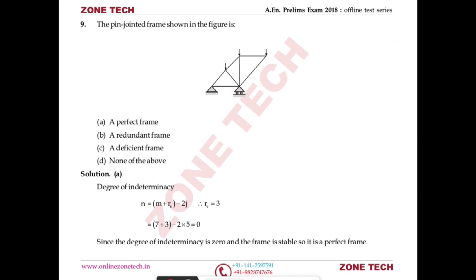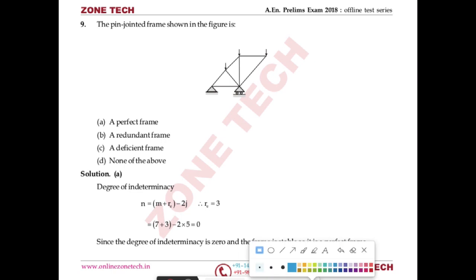Question number nine: classify the pin jointed frame shown in the figure. Options are: A) perfect frame, B) redundant frame, C) deficient frame, D) none of the above. A perfect frame has static indeterminacy zero; redundant means indeterminate; deficient means unstable. We check by finding the degree of indeterminacy = number of unknowns minus number of equations available.